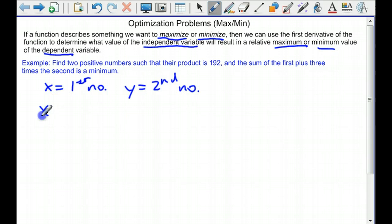Their product is 192. And we want to minimize the sum of the first plus three times the second. So that means that we're going to make our function be f of x is the first added to three times the second.